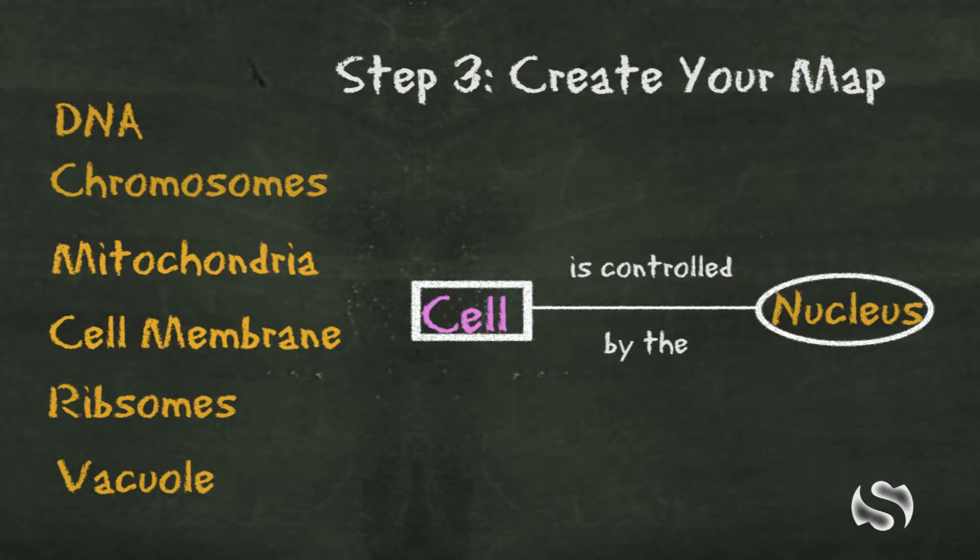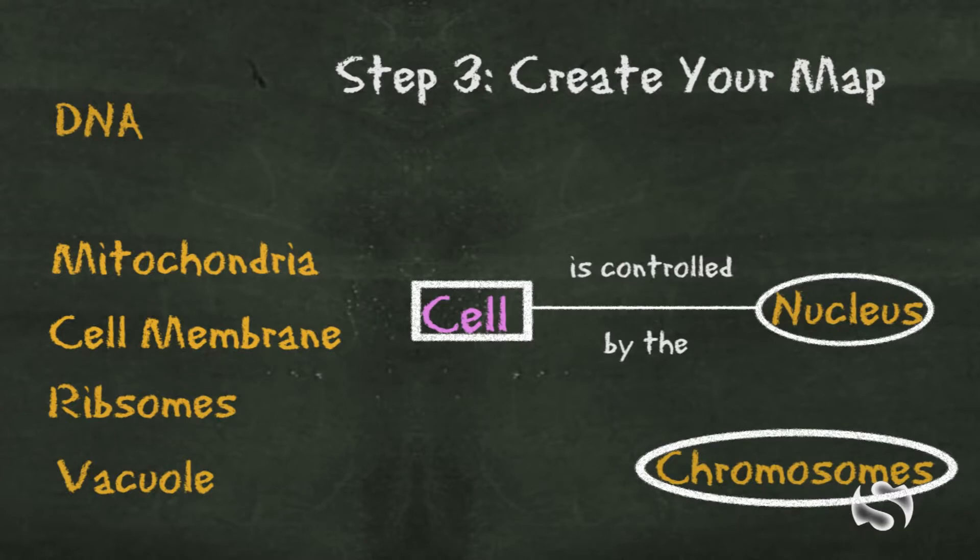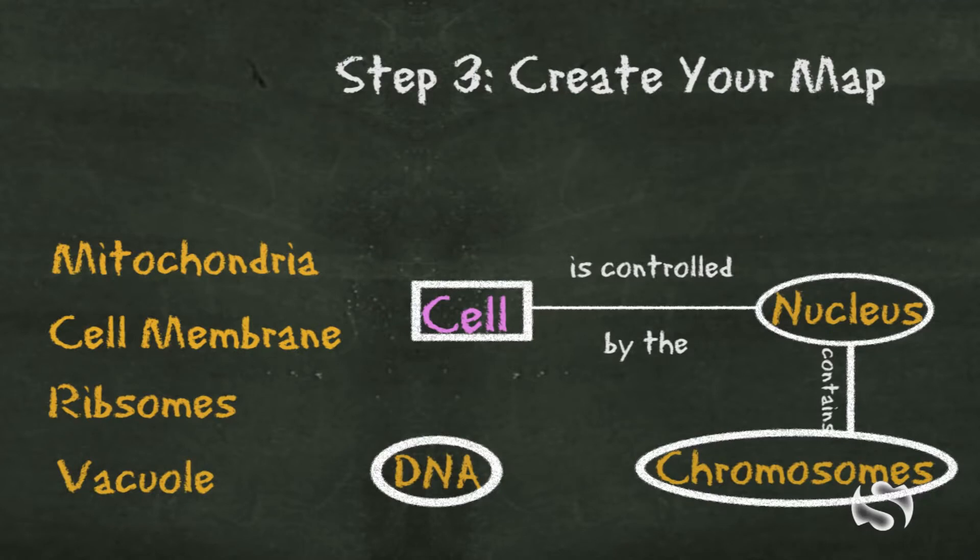Then going further from there, we know that chromosomes are inside of the nucleus. So we might extend a line from nucleus and say that the nucleus contains chromosomes. And even further from there, we know that DNA is what makes up chromosomes. So we might extend a line from chromosomes saying chromosomes are made up of DNA.